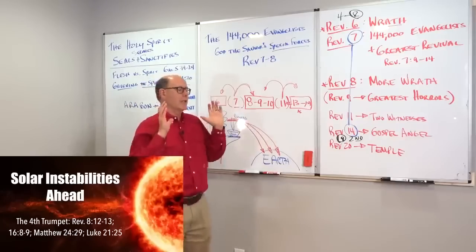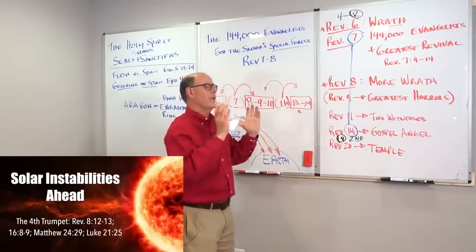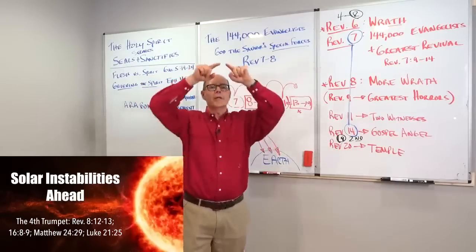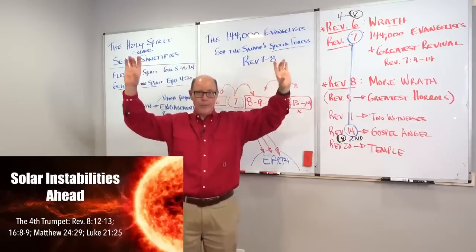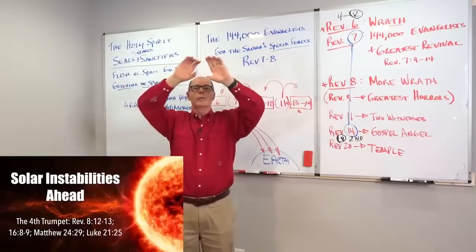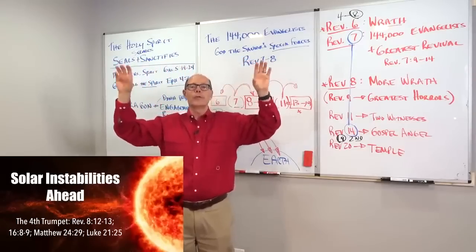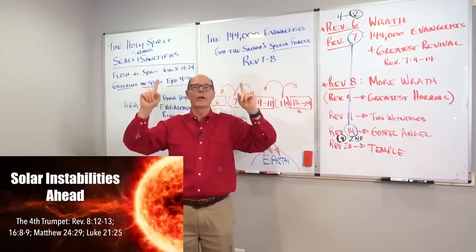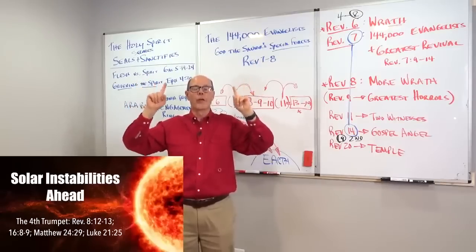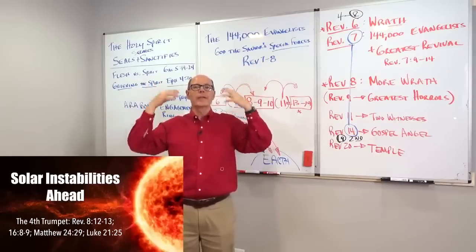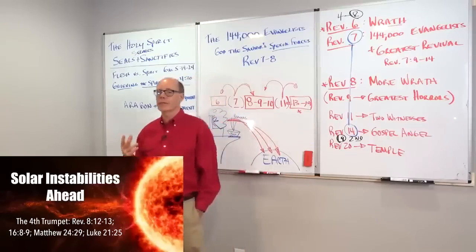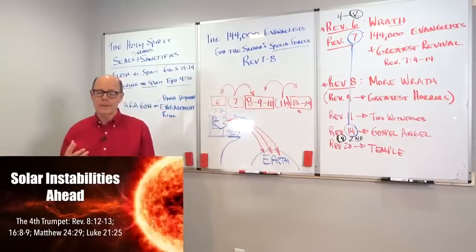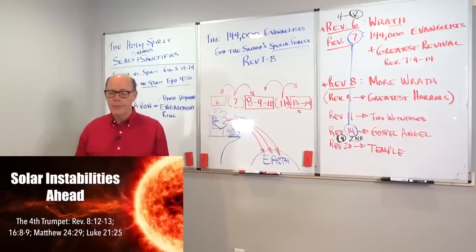In 1858, a solar flare so big came toward the earth that it caused the telegraph lines, the metal lines between wooden poles that were strung across America, to start on fire because the wires conducted so much of the radiation that came from the sun. Carrington event was a disaster for the earth. And that is probably what it's talking about.